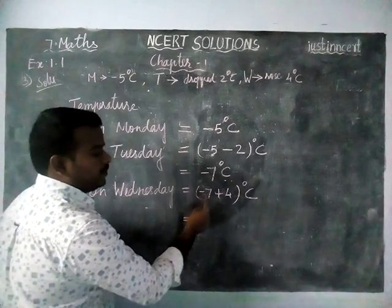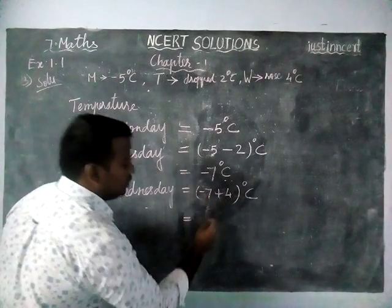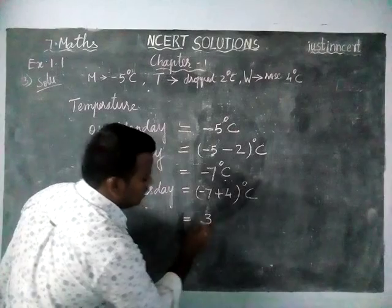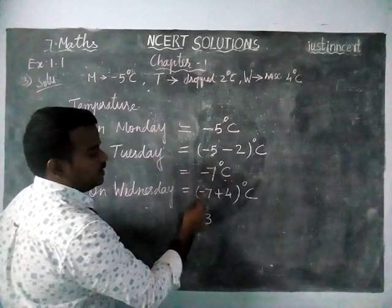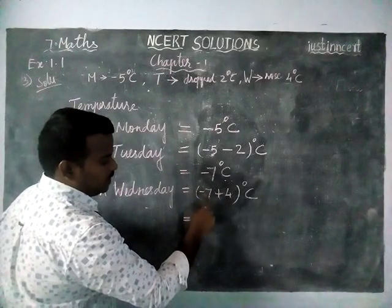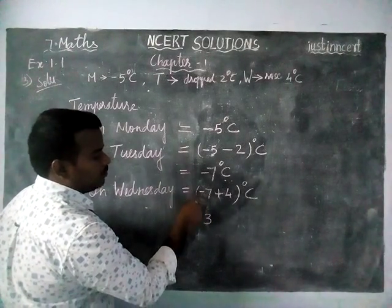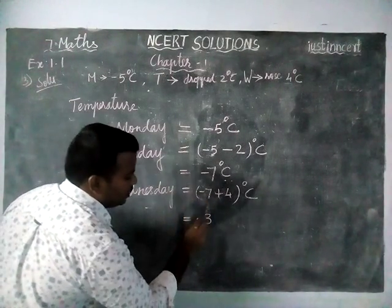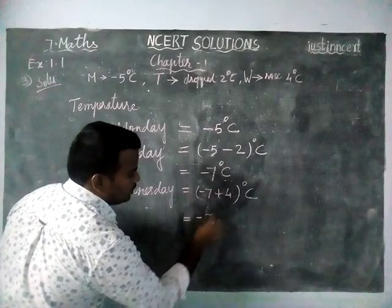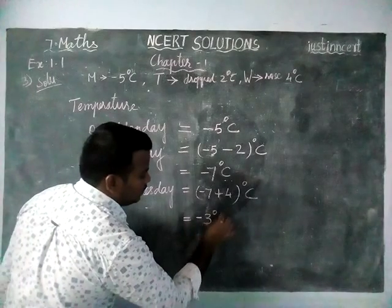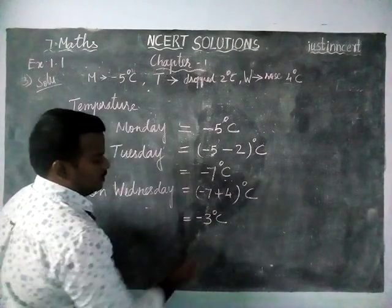The difference between 7 and 4 is 3. The greatest number is 7, and the sign of the greatest number is minus. So the answer is minus 3 degrees Celsius on Wednesday.